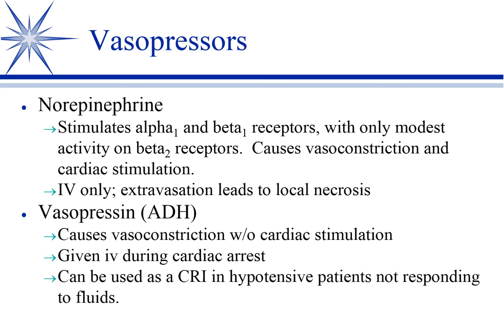We really don't use epinephrine as a vasopressor except for anaphylaxis. So what do we use? We've got several different choices and it tends to be clinician preference. The criticalists like norepinephrine — it stimulates alpha-1 and beta-1 but only has modest activity on beta-2s. It's IV only.